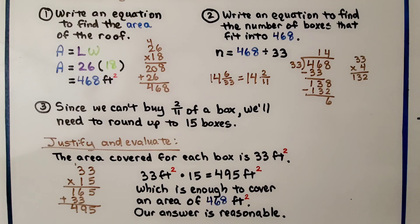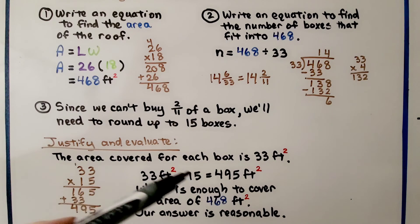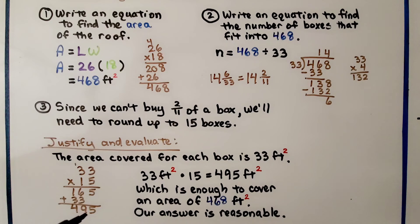We can justify and evaluate our answer. The area covered for each box is 33 square feet. So 33 times 15 is 495. That would be 495 square feet, which is enough to cover the area of 468 square feet. So our answer is reasonable. 15 boxes are needed to cover that roof.